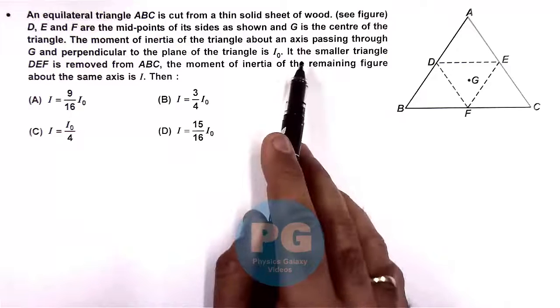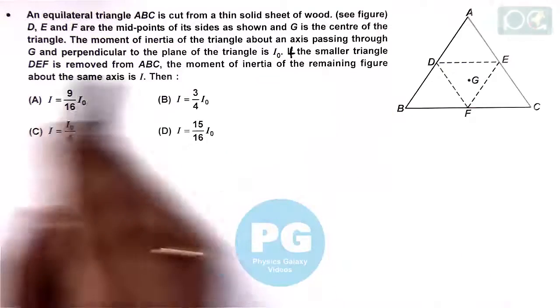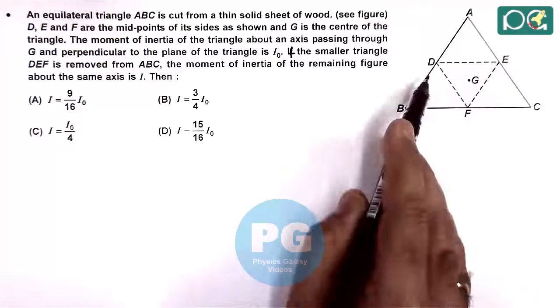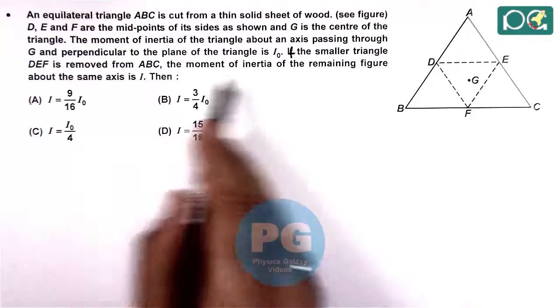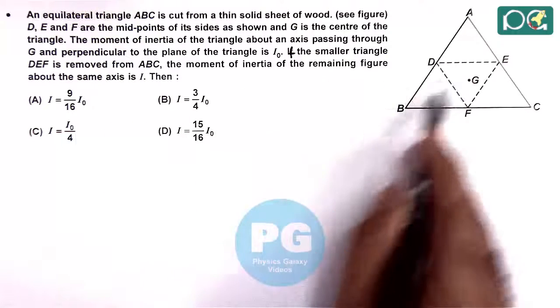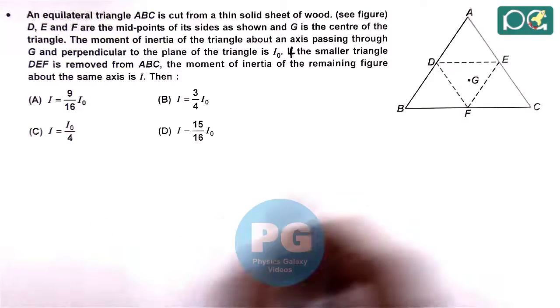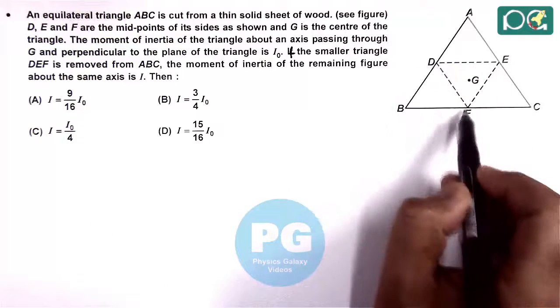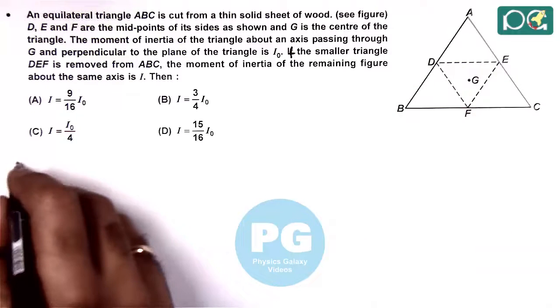It is saying if the smaller triangle DEF is removed from this bigger triangle ABC, then we are required to find the moment of inertia of the remaining figure with this triangular hole. So first we need to check what will be the moment of inertia of the smaller triangle in terms of the value of I₀ which is given to us.